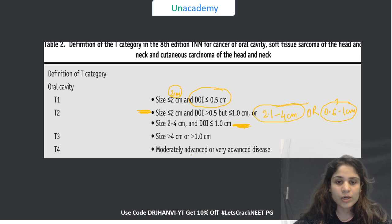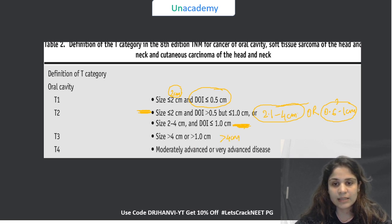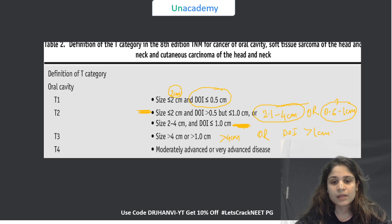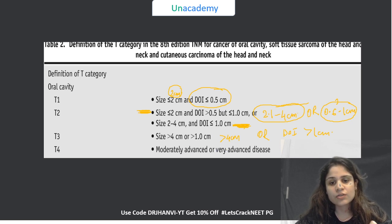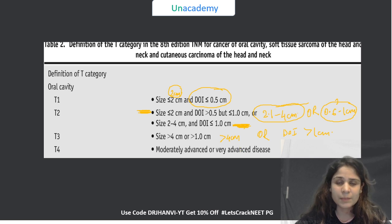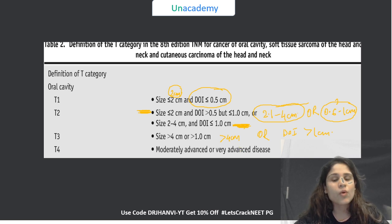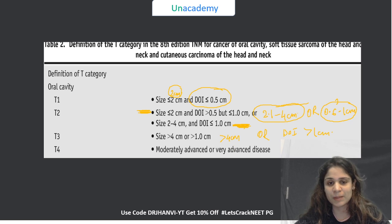In T3, your size should be more than 4 cm or your depth of invasion should be more than 1 cm. And T4 is either moderately advanced or very advanced disease. How do we remember all of this? It is so confusing, so here is where our story starts.